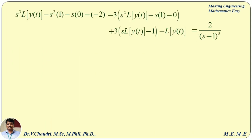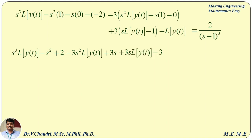Now we simplify the equation. The left-hand side becomes: s³·L{y(t)} − s² + 2, then minus 3·(s²·L{y(t)} − 3s), then plus 3s·L{y(t)} − 3, then minus L{y(t)}, all equal to 2/(s−1)³.